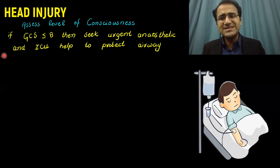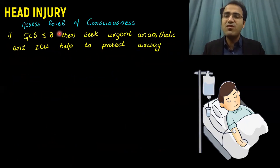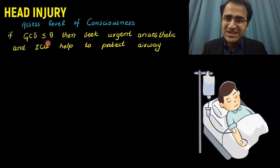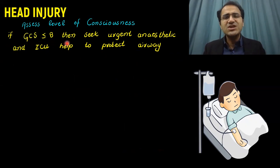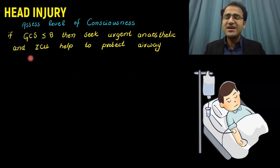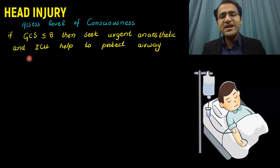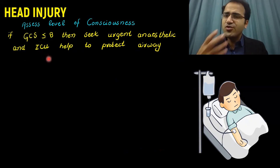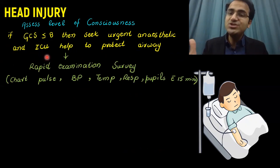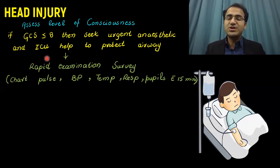Assess the level of consciousness in the patient. If the GCS is 8 or less, seek urgent anesthetic and ICU care to protect the airway — you may need to intubate that patient.